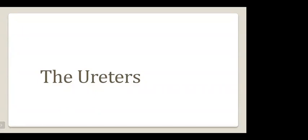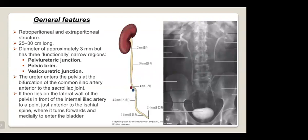The second part of the lecture covers the ureter. General features: the ureter is a retroperitoneal and extraperitoneal structure, 25 to 30 cm long, with a diameter of 3 mm. It has three functionally narrow regions: the pelvi-ureteric junction, the pelvic brim, and the vesico-ureteric junction when entering the bladder.